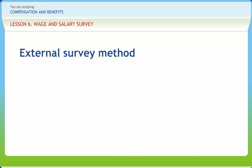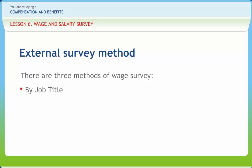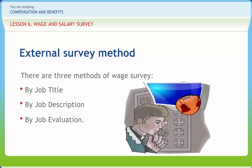Whether the pay survey is commissioned through a consultant or by the enterprise itself, the approach is the same. There are three methods of wage survey: one, by job title; two, by job description; and three, by job evaluation. In the job title method, the company collecting information gets the pay details for similar job titles in other companies. A wage survey based on job titles does not provide accurate information. The job title method may be used in those cases where the job content and the titles are more or less standardized.